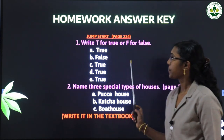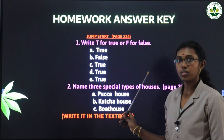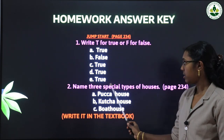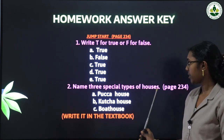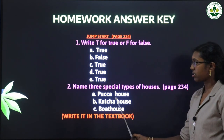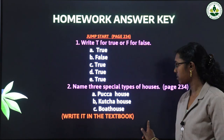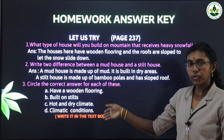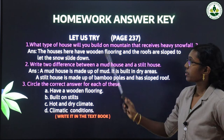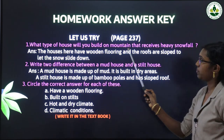True or false — do it in the textbook only. You can see the answer and correct your mistakes. Name three special types of houses: pakka house, kacha house, and board house. You can write these in the textbook; this answer is just to correct.